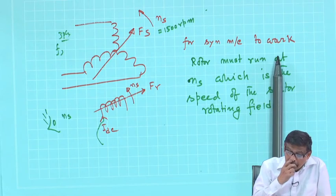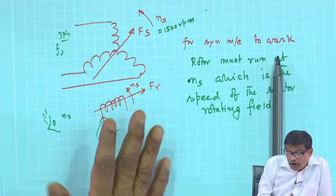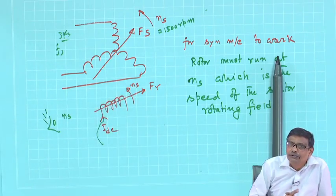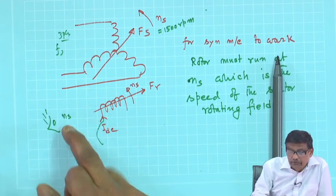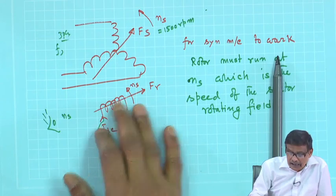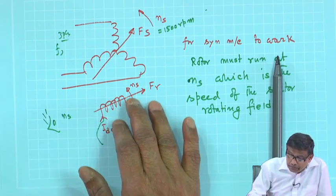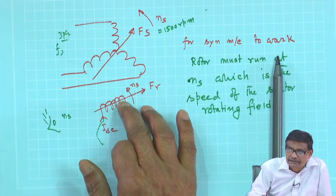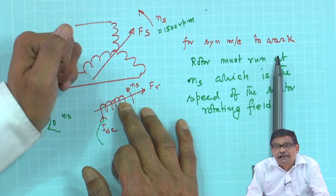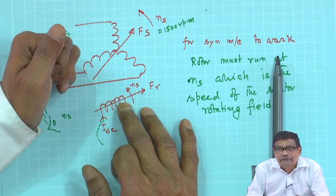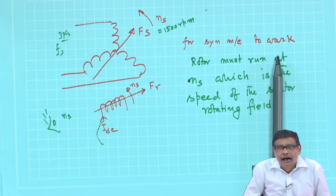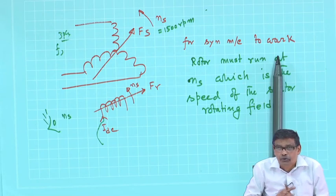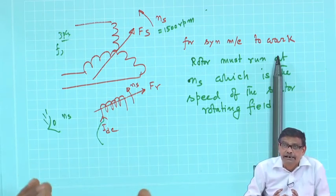One crude but instructive way to start the machine as a motor: since I know when torque will be produced, I can first connect the rotor to a prime mover and bring its speed equal to the stator field speed. Then I switch on the stator supply, it will work, and then I remove the prime mover. Not a very good way of starting a synchronous motor, but physically it should work.